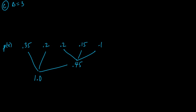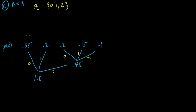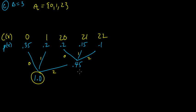Now we label the branches coming down with code symbols. Before we used zero and one; now we have zero, one, and two. Our code alphabet has three symbols: zero, one, and two. We label the branches accordingly and determine the codewords just as before, starting at the root. We get codewords: zero, one, two, zero-two, one, and two-two.